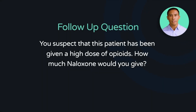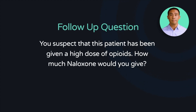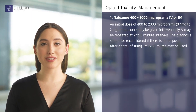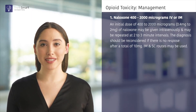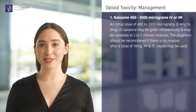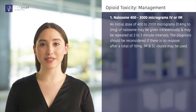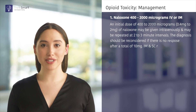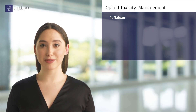You suspect that this patient has been given a high dose of opioids. How much naloxone would you give? An initial dose of 400 to 2000 micrograms of naloxone may be given intravenously and may, if required, be repeated at 2 to 3 minute intervals. The diagnosis of opioid toxicity should be reconsidered if there is still failure to respond after a total of 10 milligrams has been administered.